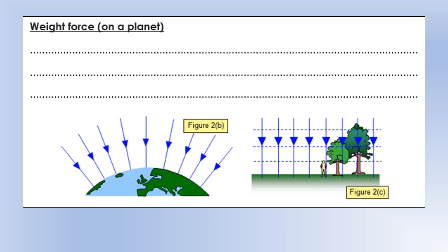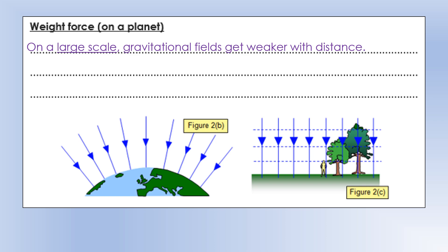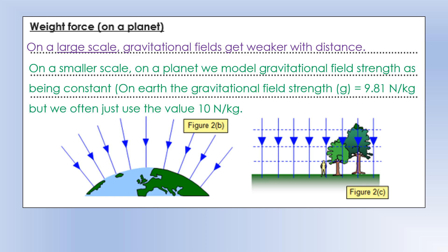Let's now go down a scale. On the surface of a planet, the gravitational field strength doesn't really change very much as you increase in height, unless you go really far away. So we model the gravitational field on the surface of a planet as approximately a constant field strength. On Earth it has the value of 9.81 newtons per kilogram, but we usually just use the number 10.